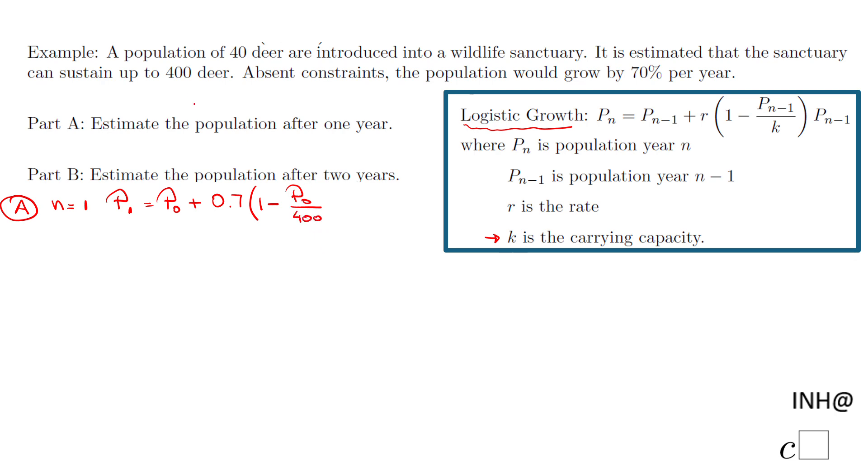Times P sub 0. Now what is this P sub 0? This P sub 0 is the initial population. So I'm gonna write this one more time and I will replace P sub 0 with 40.